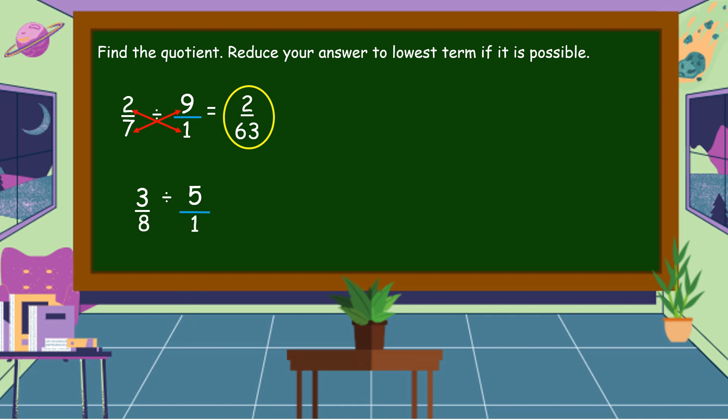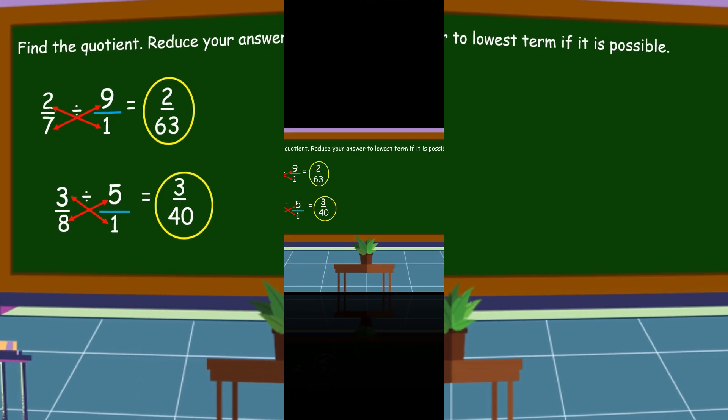Then, cross multiply. Three times one is equal to three. Eight times five is equal to forty. Tapos, evaluate natin yung ating answer kung meron pa ba ang common factor. Three over forty. Ang forty ba ay divisible ng three? Hindi. So, ang three over forty ay nasa lowest term na.